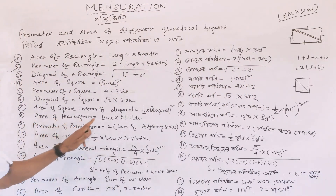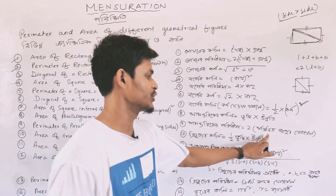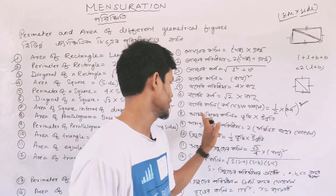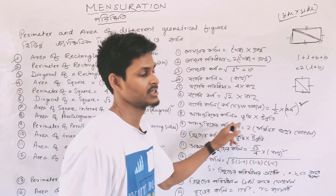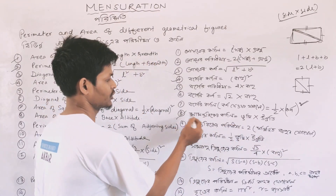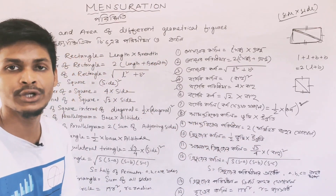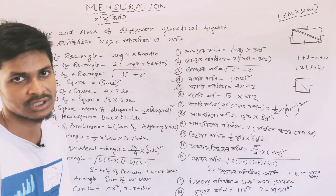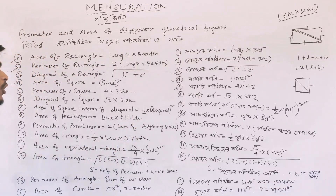Area of parallelogram is base into altitude. In Bangla, parallelogram is called samantarik, and the formula is bhoomi into ucchota, that is base into altitude.